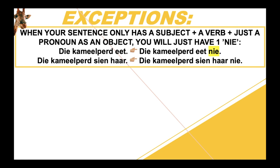So when your sentence only has a subject plus a verb, or if the sentence only has a subject, a verb, and then a pronoun as an object — and just the pronoun as an object — you will only have one 'nie'. With 'die kameelpaard eet', if you had to follow the regular rule, your first negative would come after your first verb, which is 'eet', but it's also the end of your sentence. You cannot say 'die kameelpaard eet nie nie'. So that is why it just becomes 'die kameelpaard eet nie'.